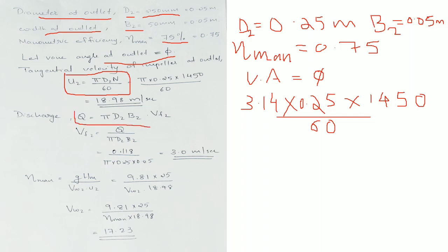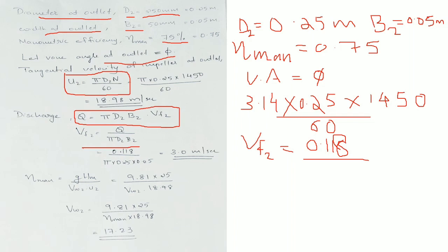Vf2 is equal to Q divided by π·D2·B2. Substituting the values: Q is 0.118, D2 is 0.25, B2 is 0.05. This gives Vf2 equal to 3 m per second.